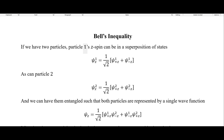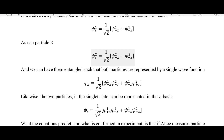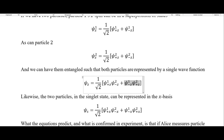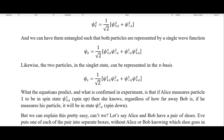So let's say we have two particles, and particle one's z-spin can be represented in a superposition of states — spin up and spin down — and particle two likewise can also be represented as a superposition of spin up and spin down in the z direction. We can also have these entangled such that both particles are represented by a single wave function. This component is particle one spin up and particle two spin down, and the other is particle one spin down and particle two spin up, both in the z direction. Likewise, the two particles in the singlet state can be represented in the x basis as well, taking the same form as the z-spin.